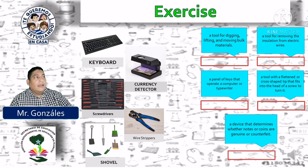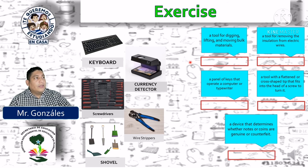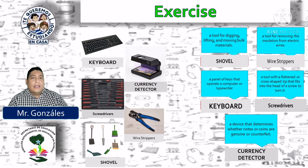Exercise. En este ejercicio trataremos de unir o escribir el nombre de la herramienta con su definición. En esta columna tenemos: keyboard, currency detector, screwdrivers, wire strippers and shovels. Y aquí tenemos las diferentes definiciones, las cuales ya hemos leído y traducido. Ustedes tomarán unos minutos para identificar cuál corresponde a cada herramienta. Pueden seguir realizando este mismo ejercicio cubriendo la definición y diciendo el nombre correspondiente de la herramienta, haciéndolo con sus compañeros y haciéndose preguntas entre sí.